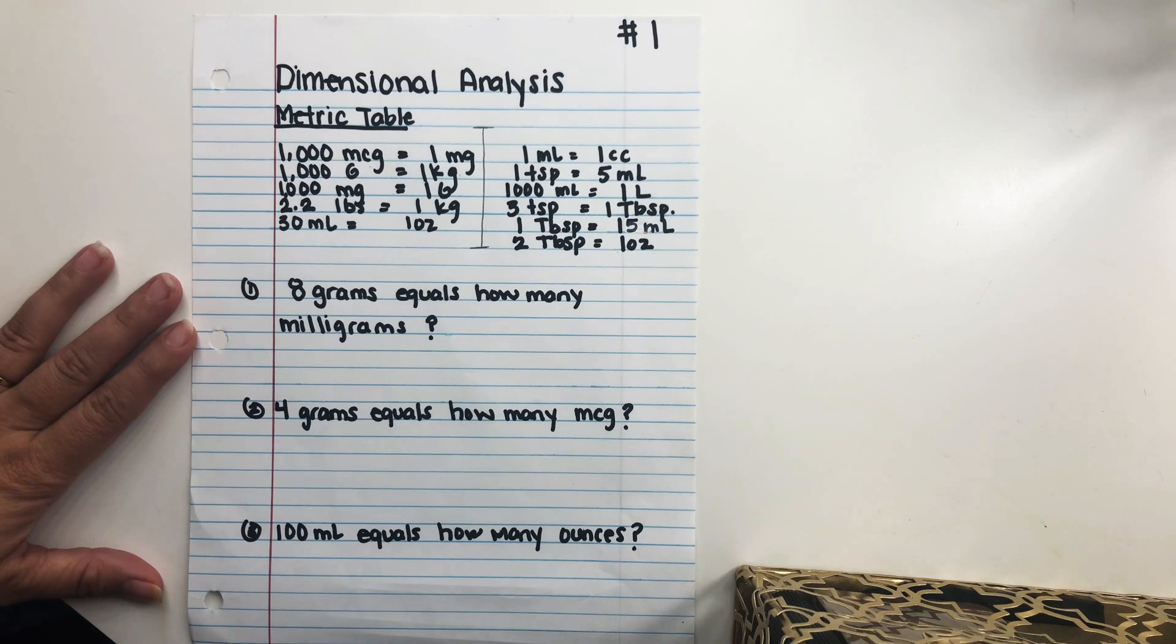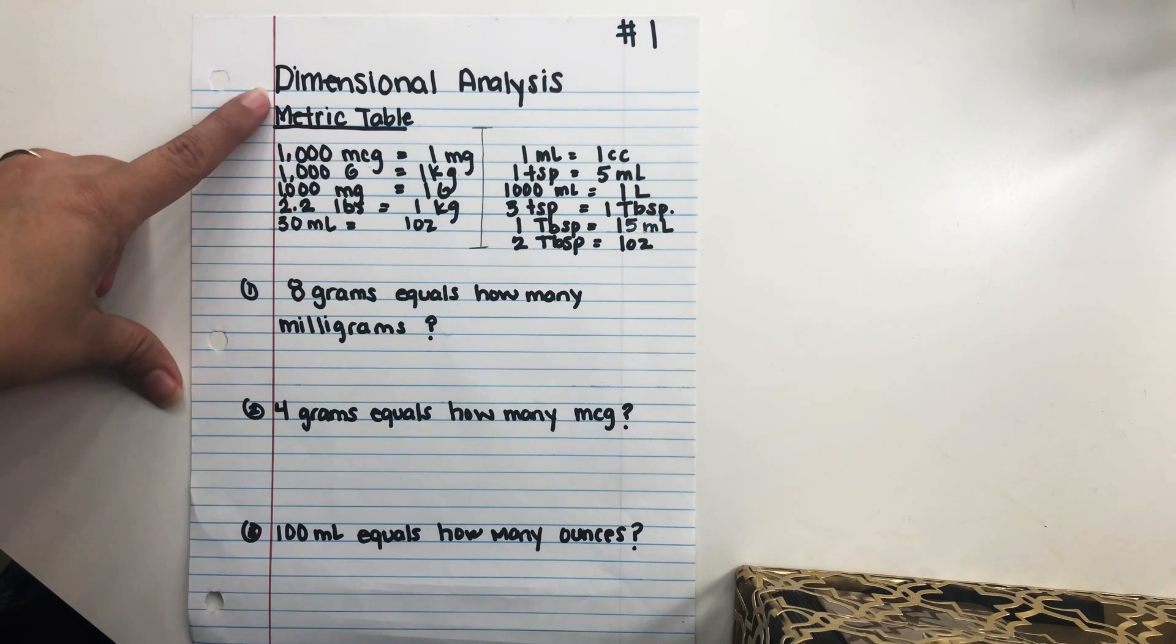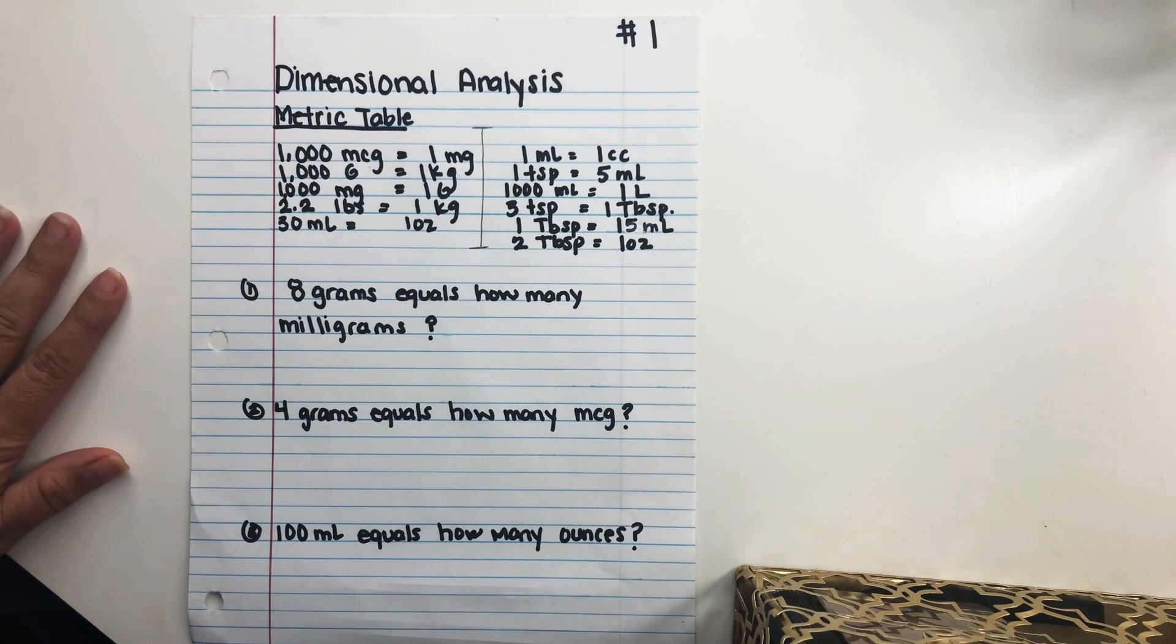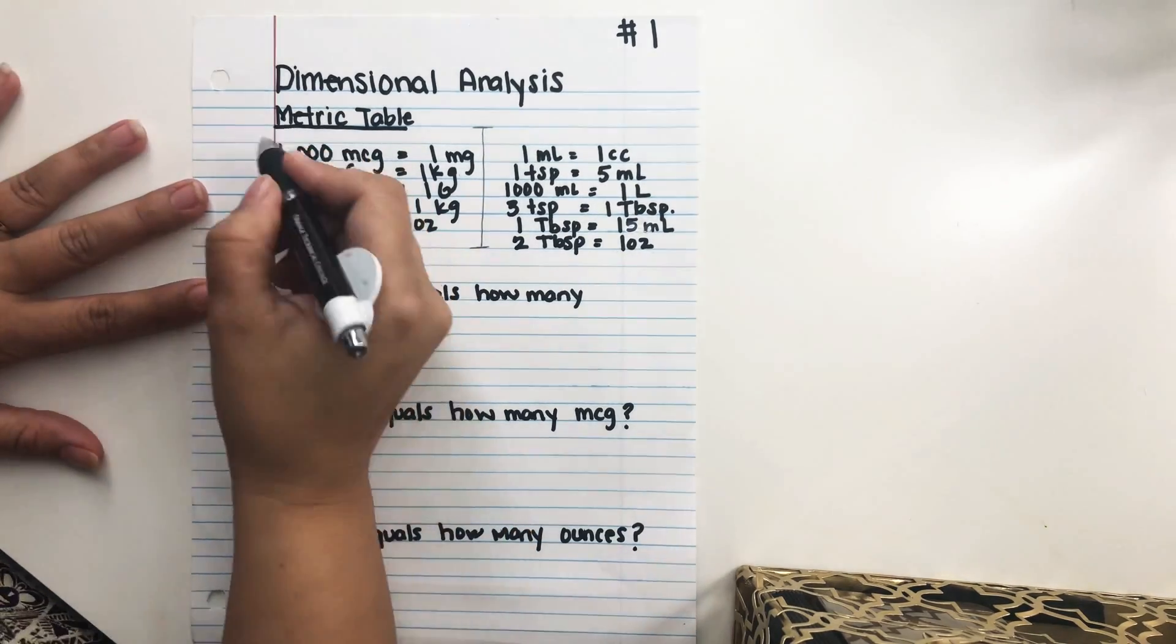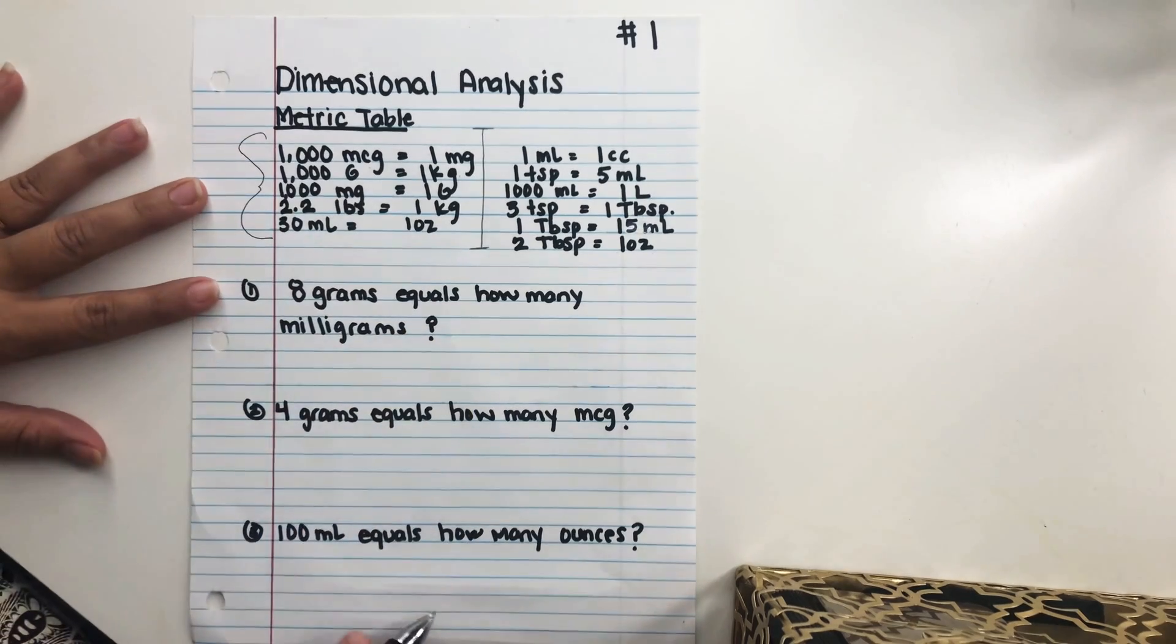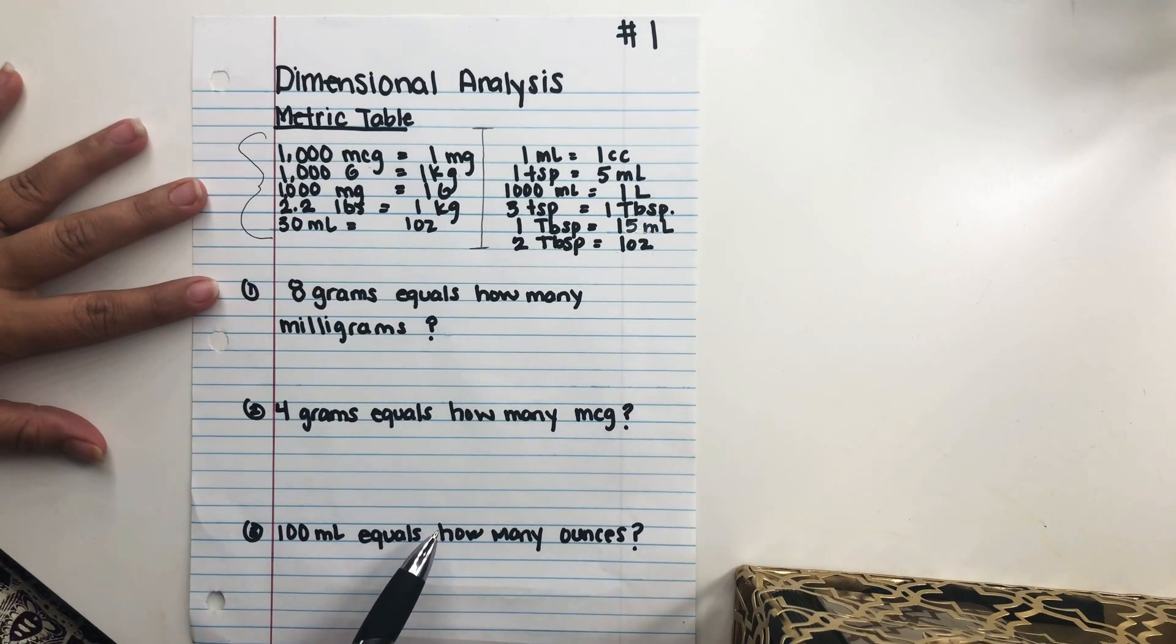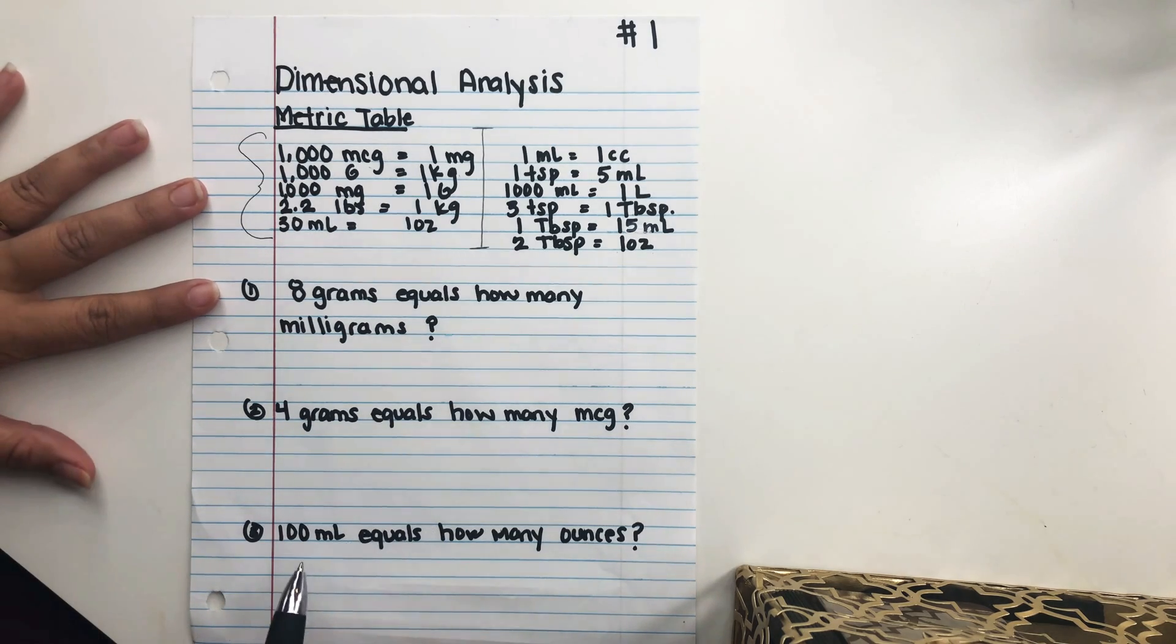I started by using some basic conversions and we'll be using dimensional analysis for this. If you don't know what that is, look it up. It's very useful, especially in dosage. The first step would be to memorize this table. It's not hard to memorize because we've been memorizing for the last how many semesters, especially in A&P 1 and 2.